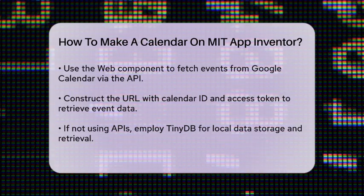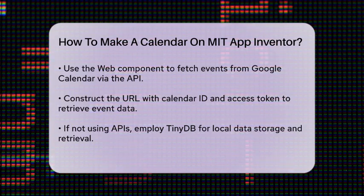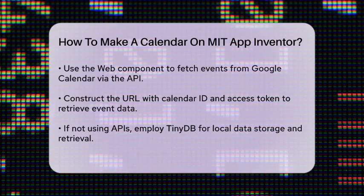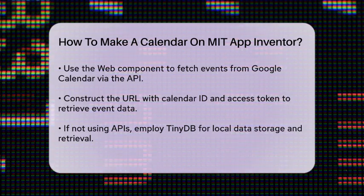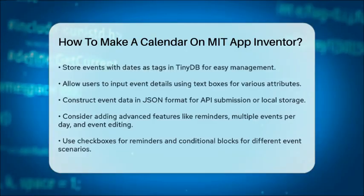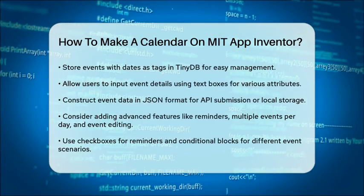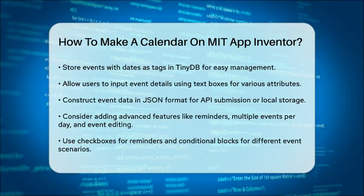To insert new calendar entries, you can use text boxes for users to input event details such as date, start time, end time, title, description, and location. You'll then construct the event data in JSON format and use the Web1 post text method to send this data to the API or store it locally in TinyDB.